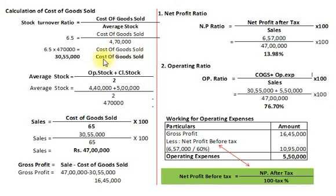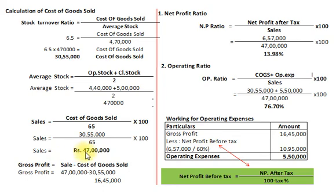As per the information, cost of goods sold is 65% of total sales. So total sales = COGS / 65% = Rs. 47,00,000. Gross profit = sales minus cost of goods sold = 47,00,000 minus 30,55,000 = Rs. 16,45,000.